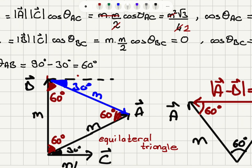All sides are M, M, M and all angles are 60, 60, 60 degrees. And A minus B is a vector that points from the tip of vector B to the tip of vector A. So this is our vector A minus B.